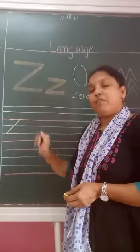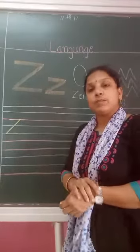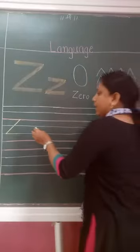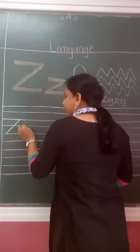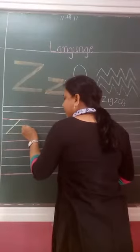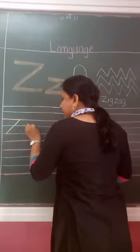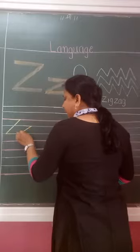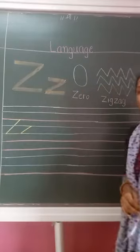Now I will show you small Z. Small Z. Slipping line, slant line, slipping line.